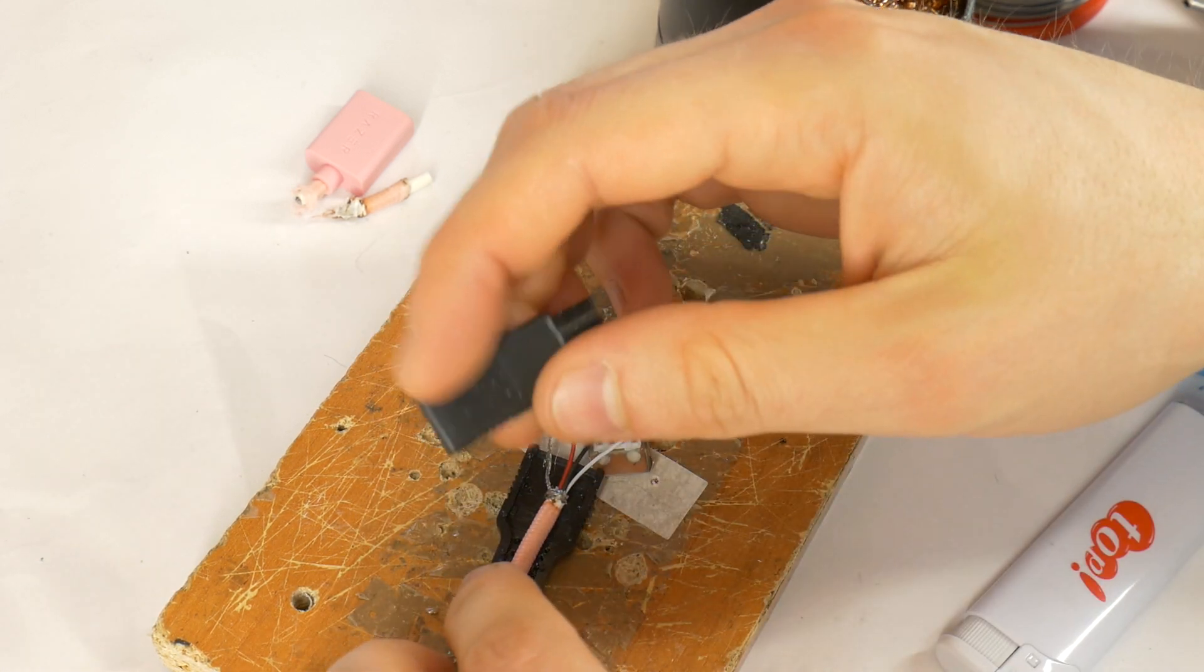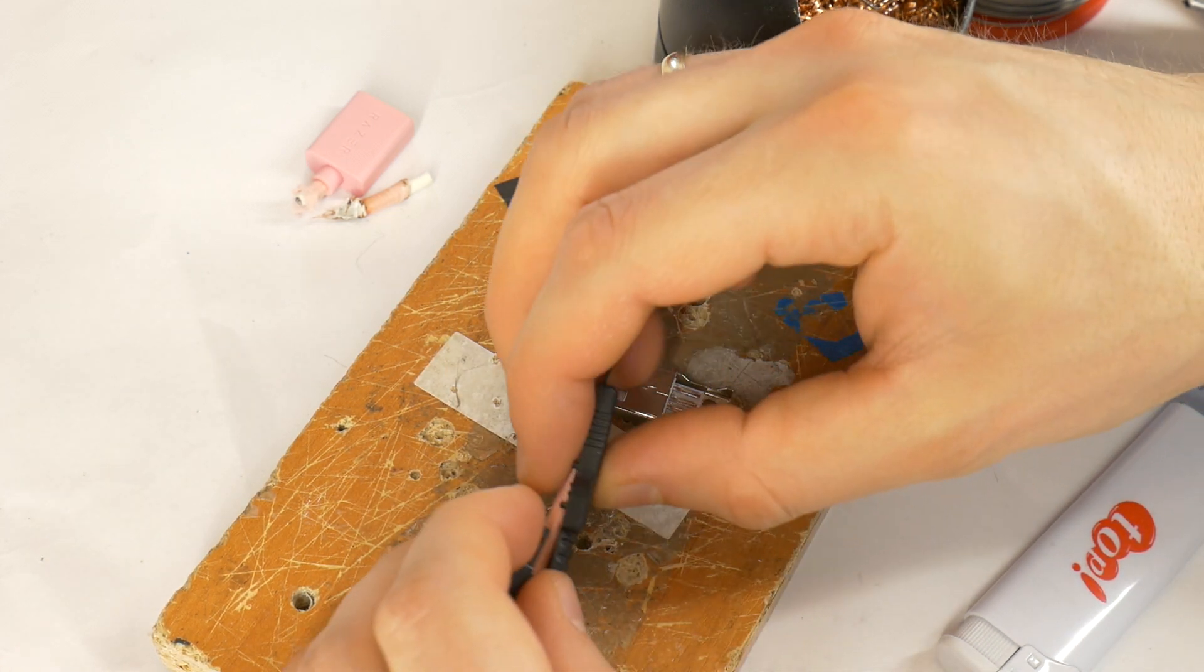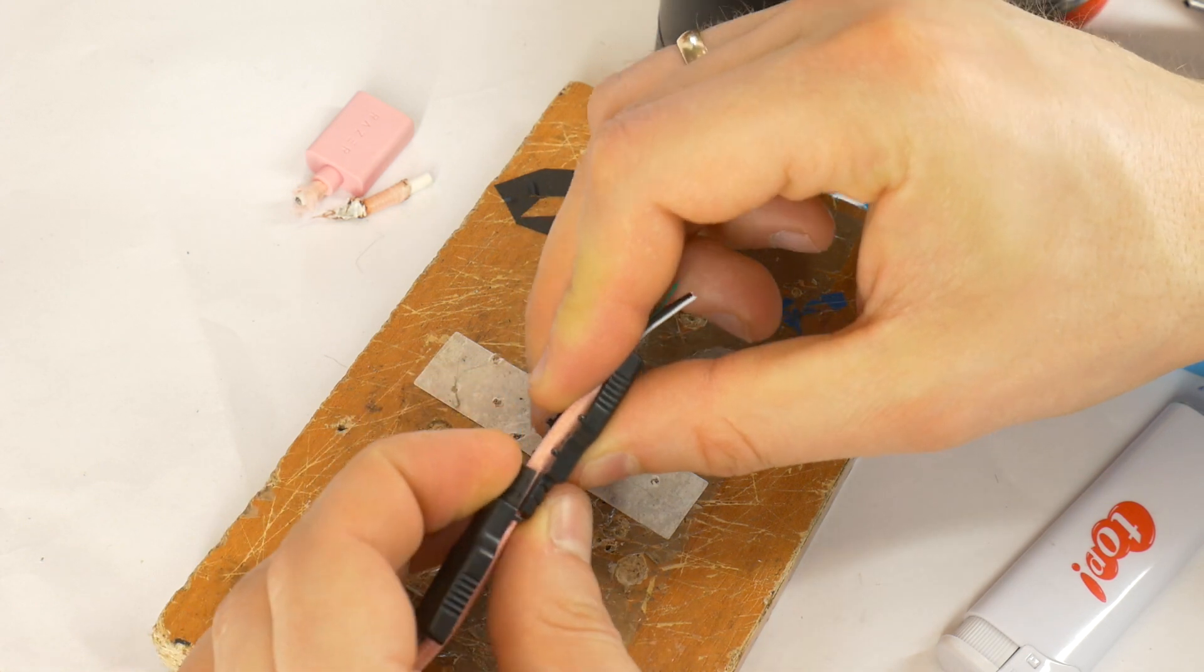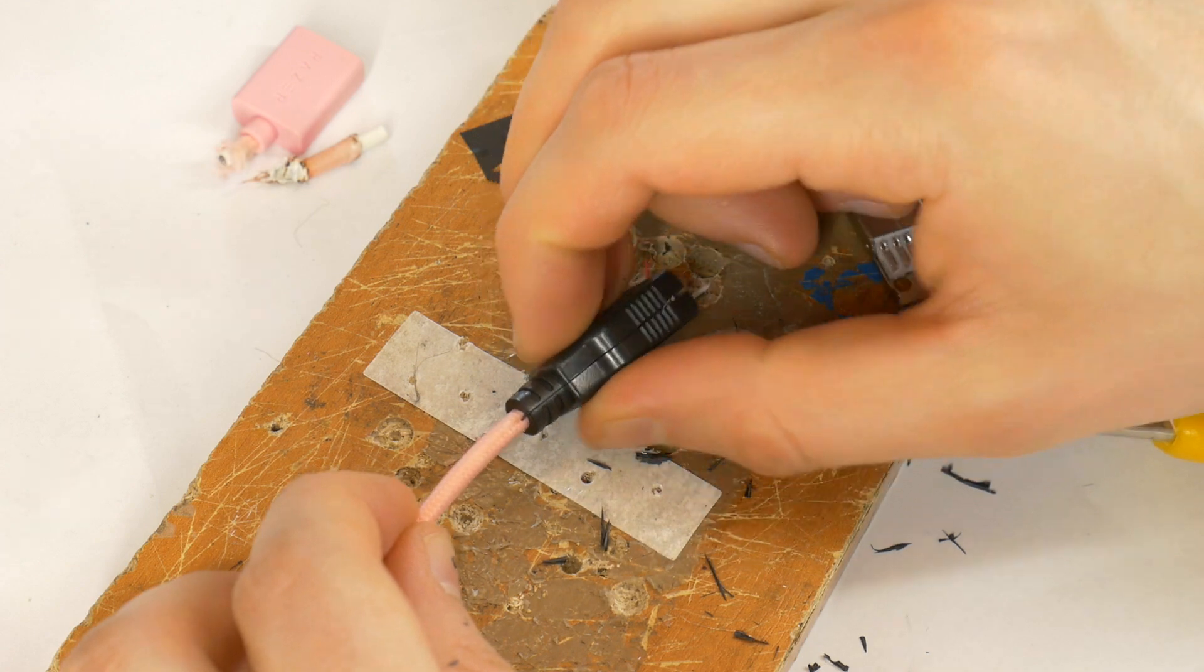Check if the headphone cable fits in the new replacement connector and check the two parts of the connector can be joined together. If necessary trim any excess plastic so they fit properly.